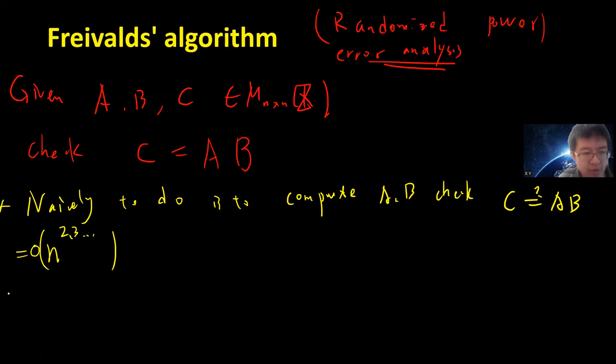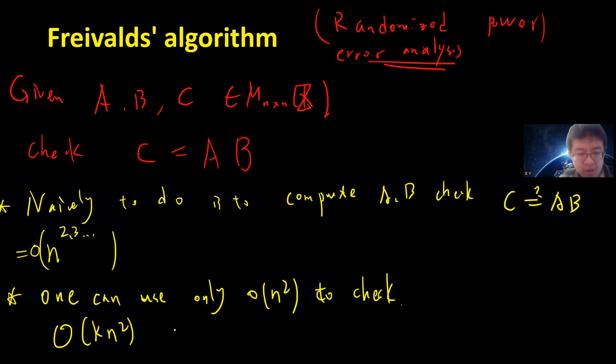But there is a probabilistic method if you can use a randomized algorithm. Then you can use only O(n squared) to check. So basically the precise statement is that you can use O(kn squared) to check whether C equals AB with probability. Your failure probability will be less or equal to 1 divided by 2 to the k. So if you increase your k, then your failure probability will be exponentially smaller.